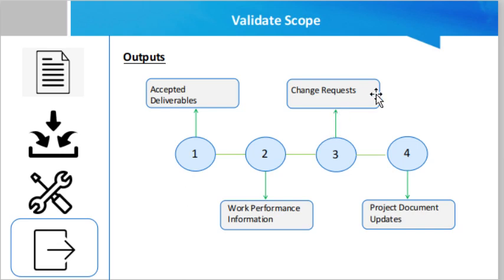Regarding change requests: it is assumed that all final deliverables would be entirely accepted by the stakeholders. Unaccepted deliverables are documented along with the reason for non-approval. In such cases, the deliverables will require changes, and that is when the change request process comes into effect to repair the defect. After the change request is executed, they are reviewed through the Perform Integrated Change Control process.